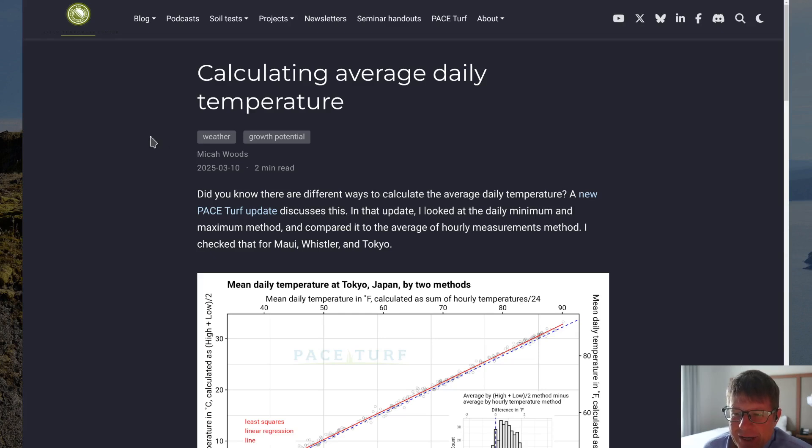This is a post on the ATC website with the title calculating average daily temperature. I will put a direct link to this in the show notes, so that you will easily be able to go check it out and look at these detailed charts that I showed in the blog post. I started this off, it's a short post, just a two-minute read. Did you know there are different ways to calculate the average daily temperature? A new PaceTurf update discusses this. In that update, I looked at the daily minimum and maximum method and compared it to the average of hourly measurements method.